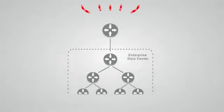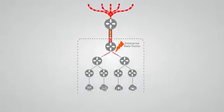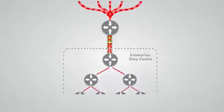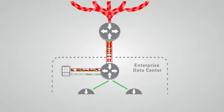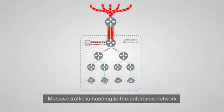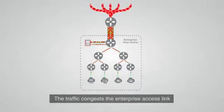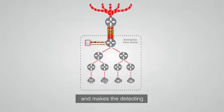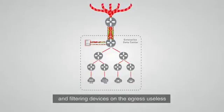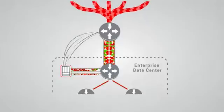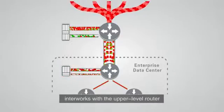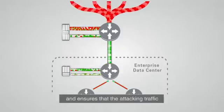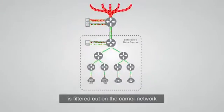Integrating core technologies, Huawei's professional Anti-DDoS solution helps you confront DDoS attacks. Let's take a look. Massive traffic heading to the enterprise network congests the enterprise access link, making detecting and filtering devices on the egress useless. Huawei's hierarchical defense technology interworks with the upper-level router and ensures that attacking traffic is filtered out on the carrier network.